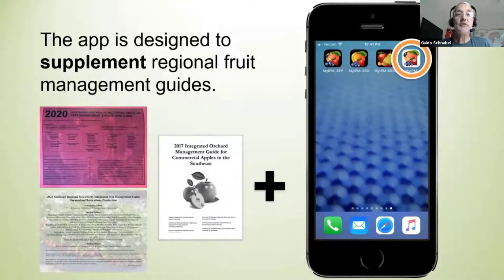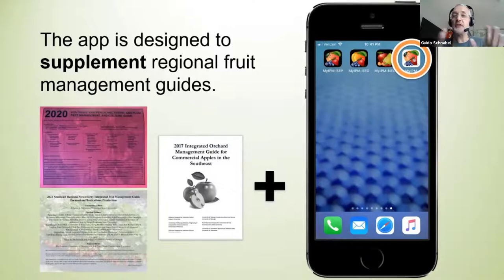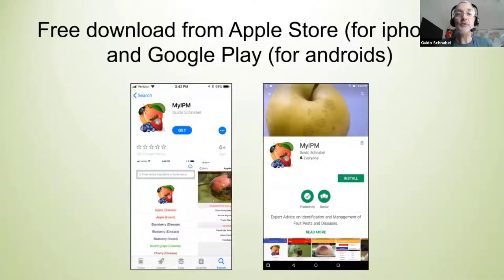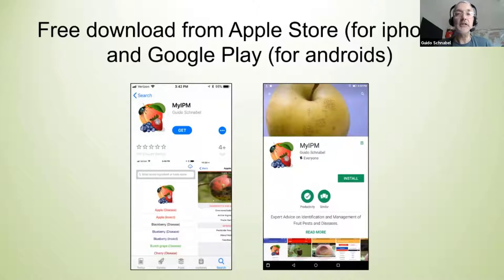The app is designed to supplement the regional fruit management guides, not substitute them. The guides have a lot of information not in the app, and vice versa — the app has information not in the spray guides, such as pictures, audio files, and interactive tables. You can download it for free on the Apple Store and Google Play Store. That was very important to us, because we didn't want a fee to be a hindrance. It's just part of our extension work, so there was really no need to charge for it.